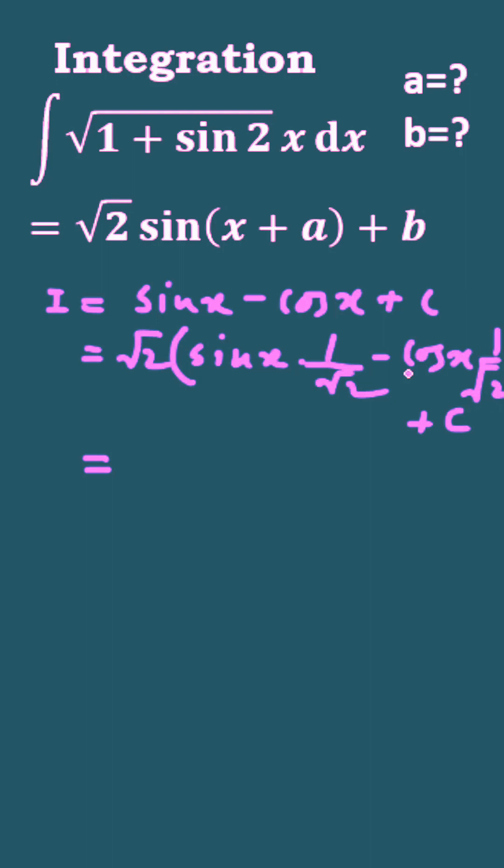Also you have to replace this, and after that the expression will become I equal to square root 2 sin of x plus a plus b, which is given in the problem.